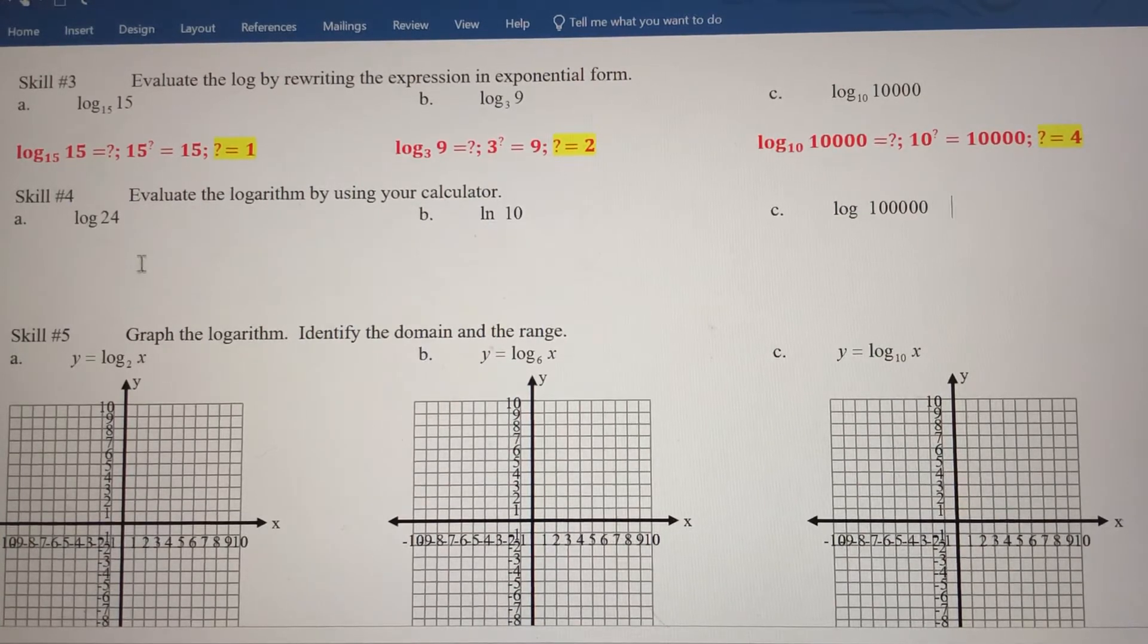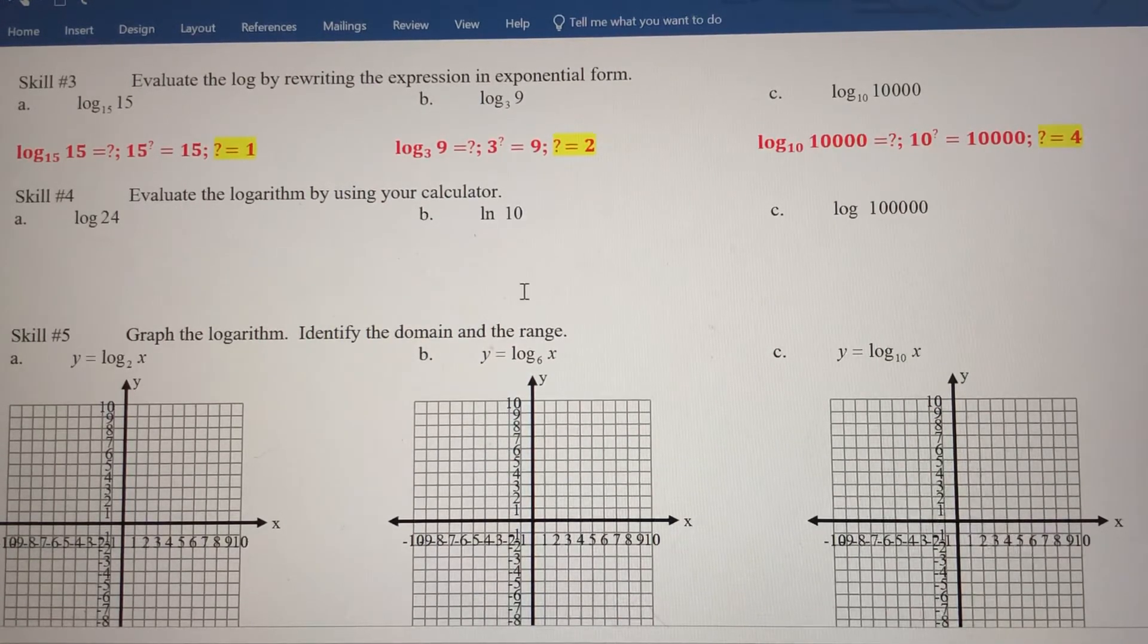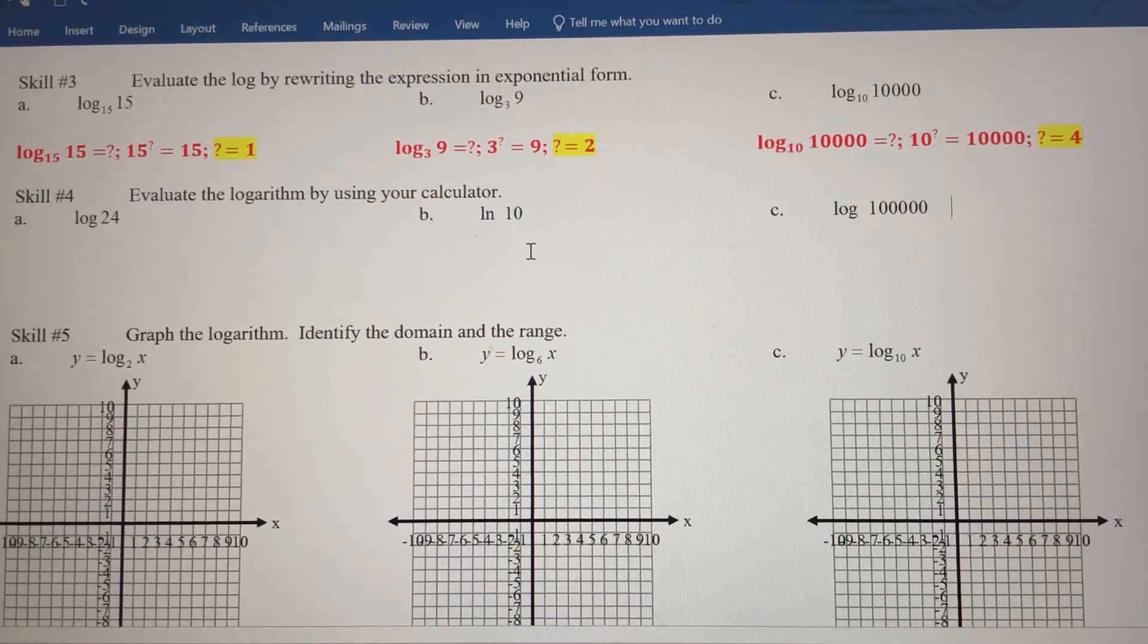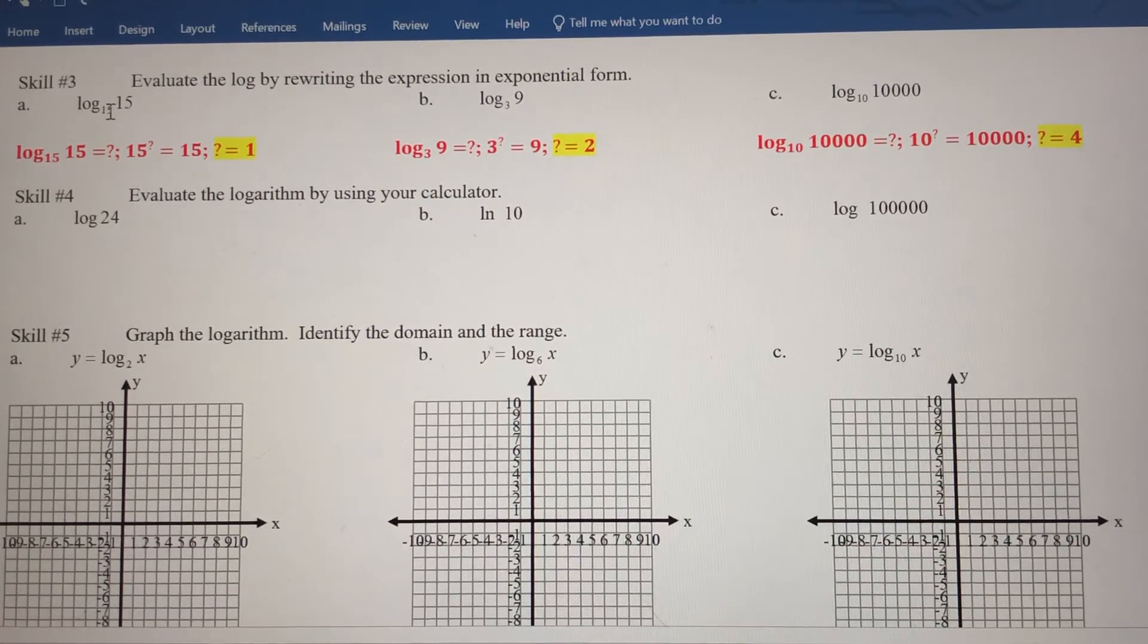Now, calculators, you can only evaluate logarithms using a calculator if the base is 10. So this is a common log here, the understood base is 10, or if the base is E, so the natural log has an understood base of E. I can't plug this into a calculator and get an answer because the calculators only have common logs and natural logs. So any base that isn't 10 or E can't be evaluated on the calculator. We're going to learn rules for how to convert this to something we could use a calculator on if you can't use mental math.